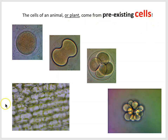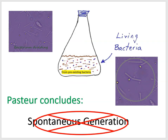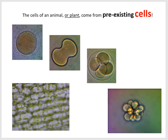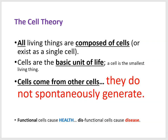Whether it's bacteria or whether it's in animals and plants, cells do not seem to be spontaneously generating — they are emerging from pre-existing cells. That was our third pillar of the cell theory: cells come from other cells. They do not spontaneously generate.